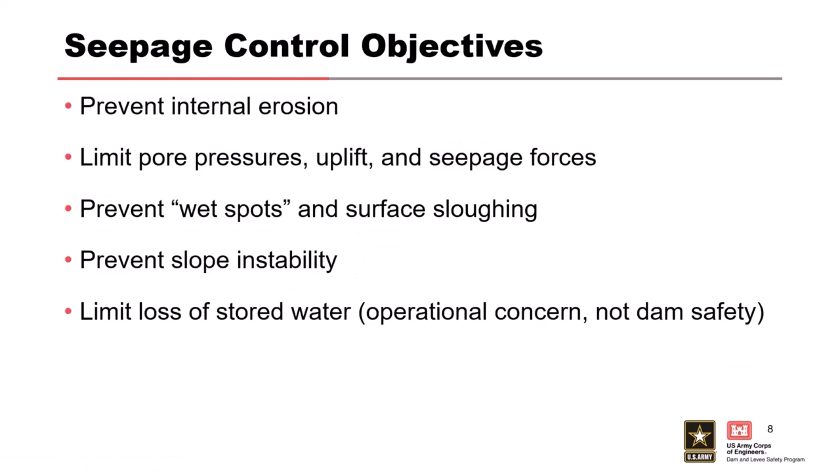So what are we trying to do? We want to prevent internal erosion — stop that migration of fines. If you can stop that migration of fines, you can stop the failure mode and arrest it. You're going to see in the upcoming slides different ways to stop that internal erosion and stop that movement of material.